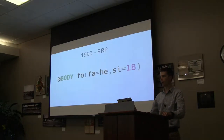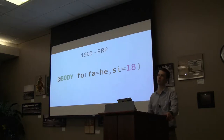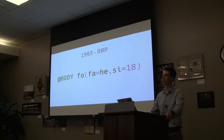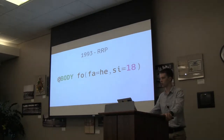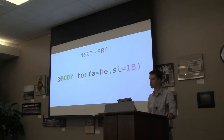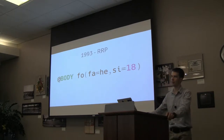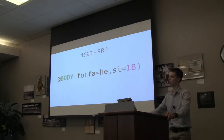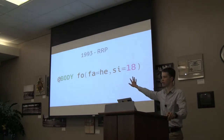The very first approach to coding styles independent of your HTML was called RRP, developed by a developer named Rob Raich. This is what it looked like: you would have a set of selectors — your app, body — and then this very terse, unusual syntax.